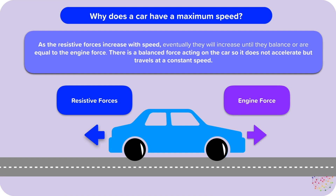Eventually, the resistive forces will increase until they balance, or are equal to, the engine force. When the forces are balanced, there's no resultant force acting on the car, so it doesn't accelerate. But it's already moving, so it's going to travel at a constant speed. We call this constant speed terminal velocity.